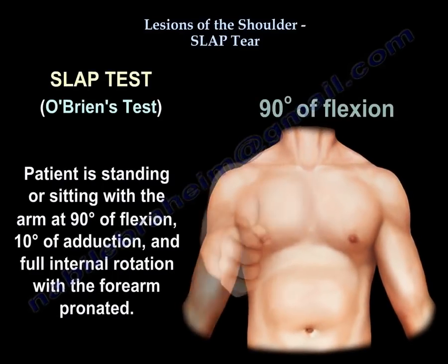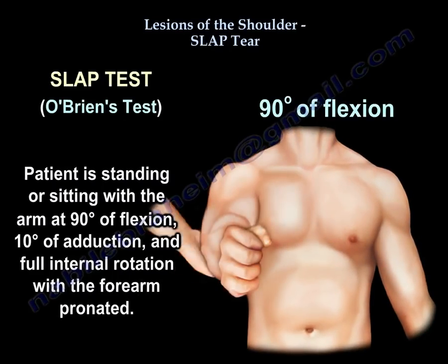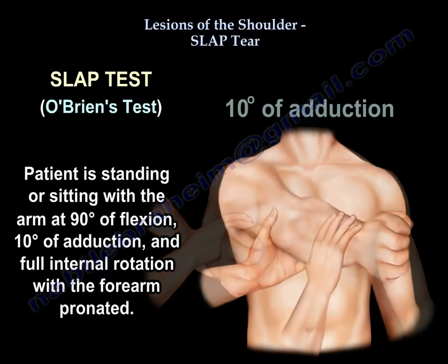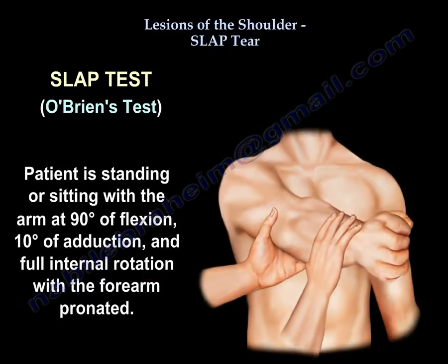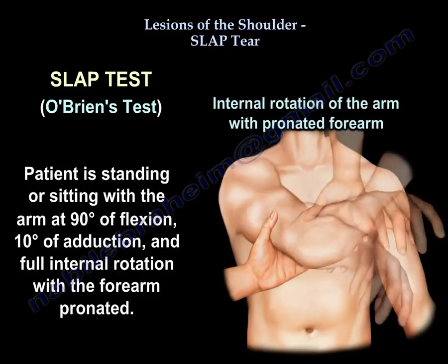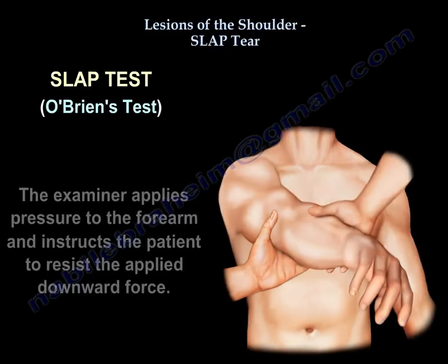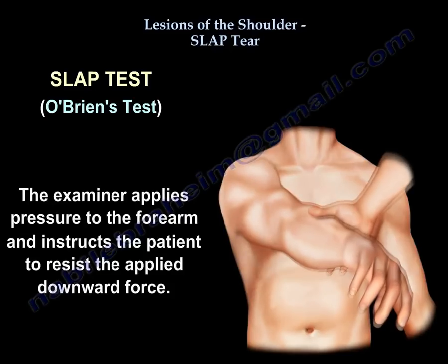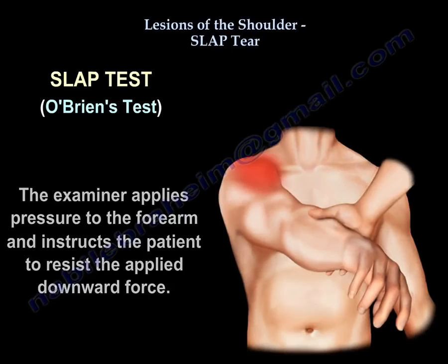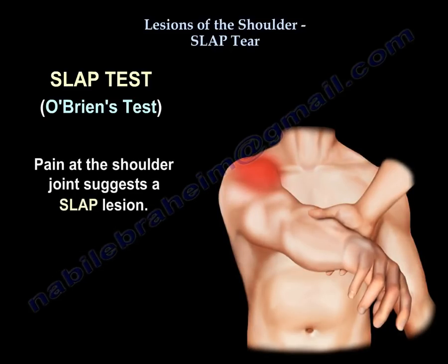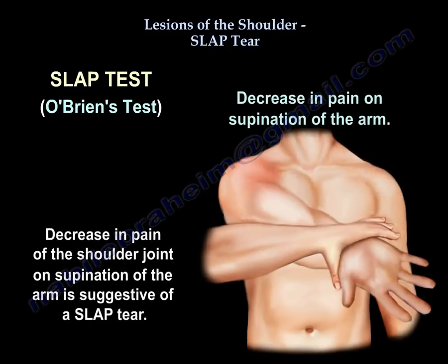To perform the O'Brien test: the patient is standing or sitting with the arm at 90 degrees of flexion and 10 degrees of adduction, fully internally rotated, with the forearm pronated. The examiner applies pressure to the forearm and instructs the patient to resist. Pain at the shoulder joint suggests SLAP tear. Decrease in pain upon supination of the forearm is also suggestive of SLAP tear.